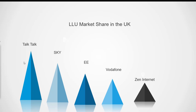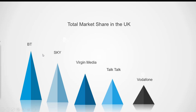In the LLU market, TalkTalk is the largest LLU provider in the UK, followed by Sky, EE, Vodafone, and Zen Internet. Looking at the total UK broadband market share — combining both BT-type DSL and cable TV — BT is the largest provider, followed by Sky, then Virgin Media at number three, TalkTalk at number four through its LLU network, and Vodafone at number five.